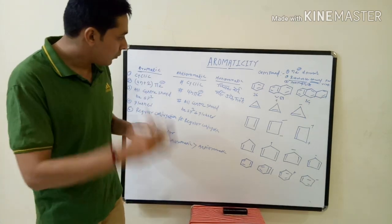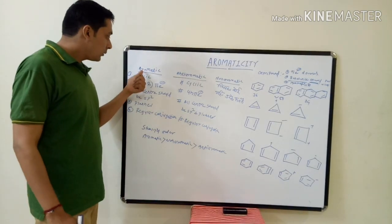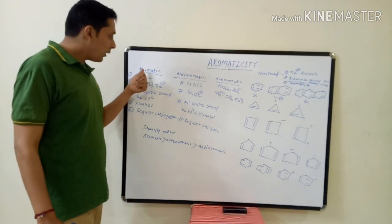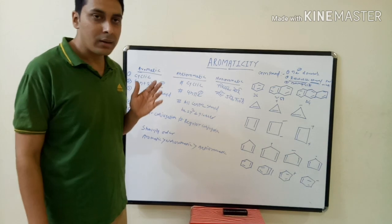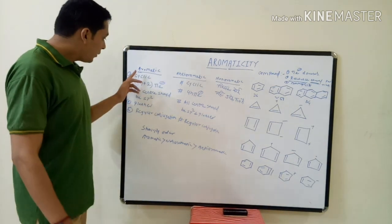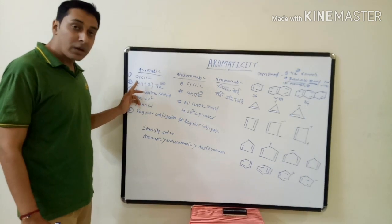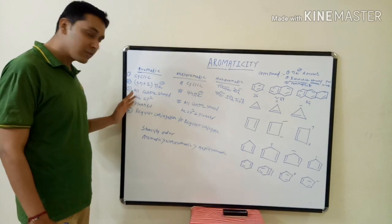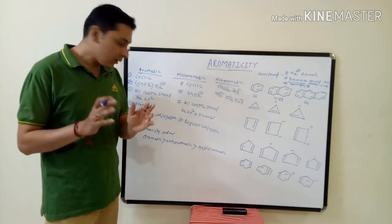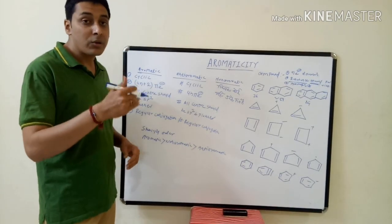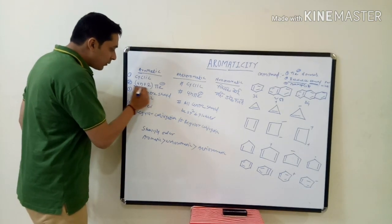We will cover the points one by one. If you consider aromatic, anti-aromatic, and non-aromatic compounds — the necessary conditions for an aromatic compound are: first, the structure should be cyclic; second, it must obey Hückel's rule, that is 4n+2 pi electrons in the system; all centers should be sp2-hybridized; the structure should be planar; and most importantly, there must be regular conjugation.